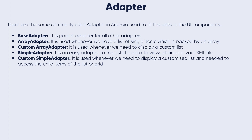The simple adapter is an easy adapter to map static data to views defined in an XML layout. In Android, we can specify the data as an array list of maps or hash maps, where each entry in the array list corresponds to one row of the list. This adapter is used for mapping static data.